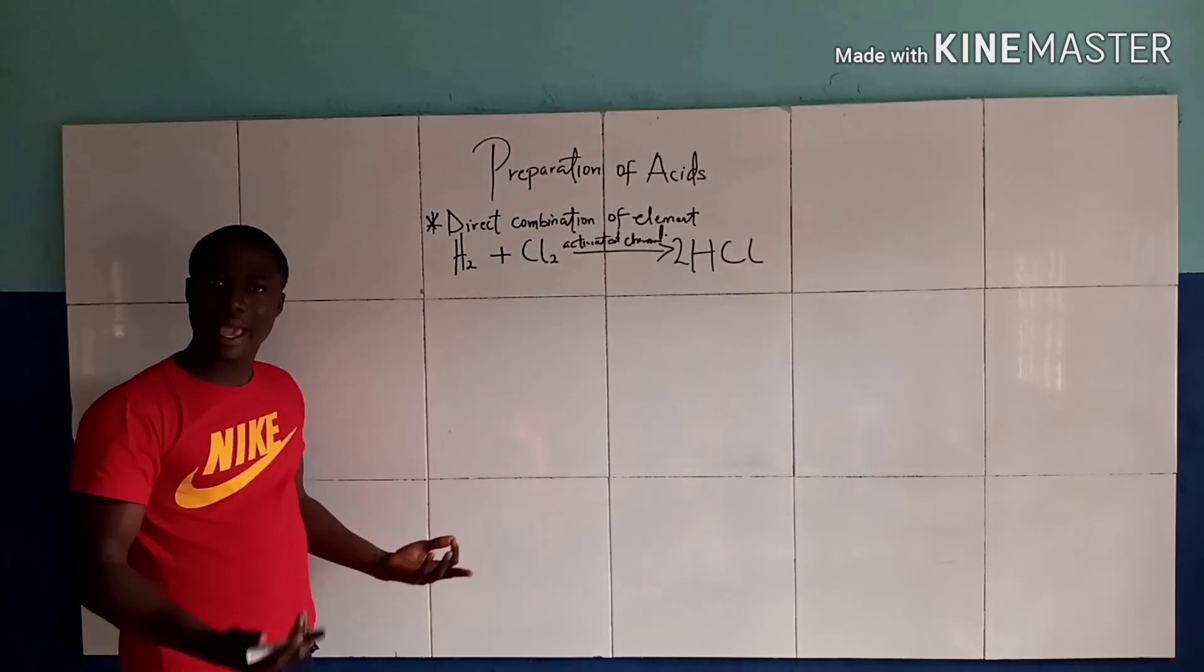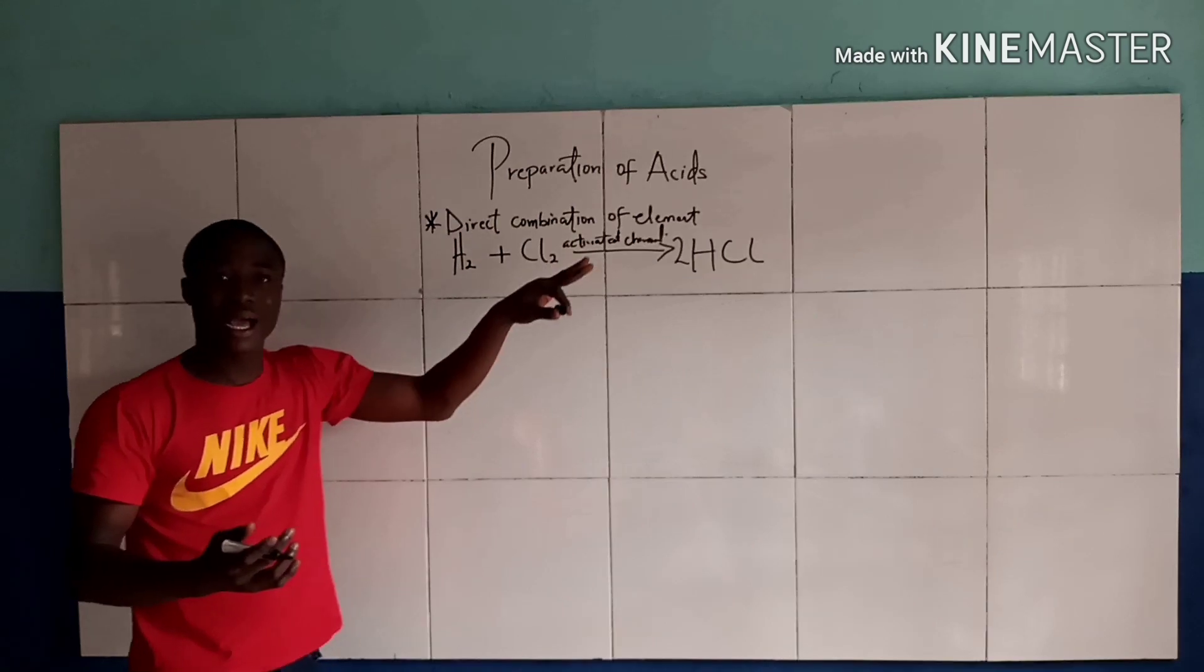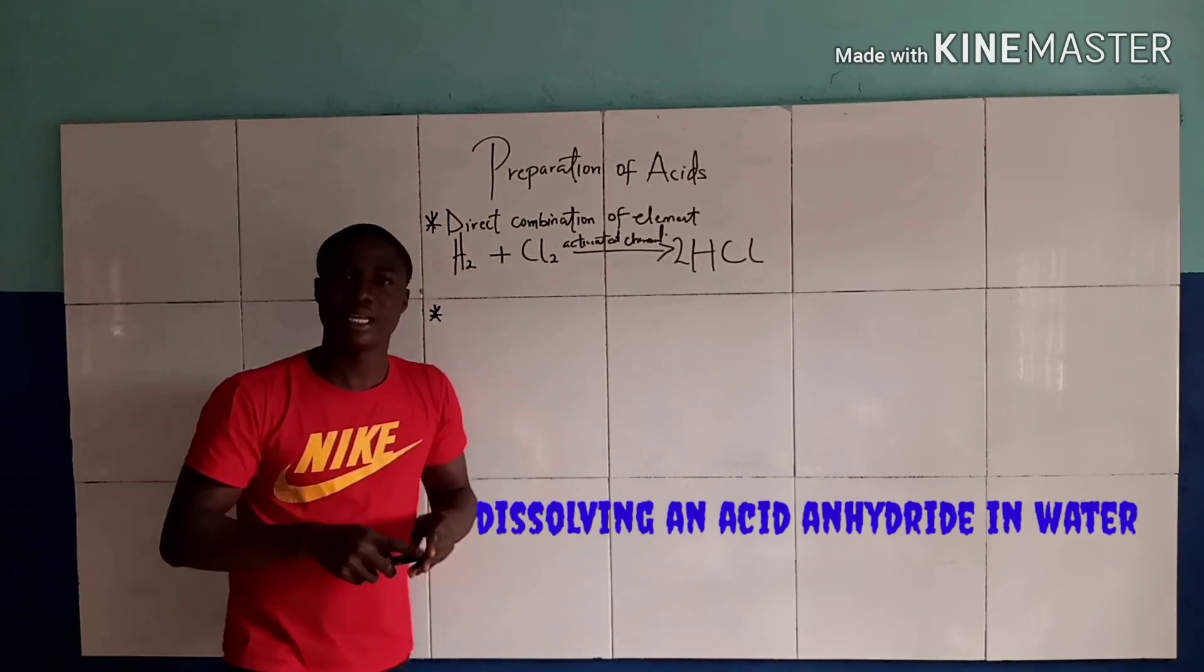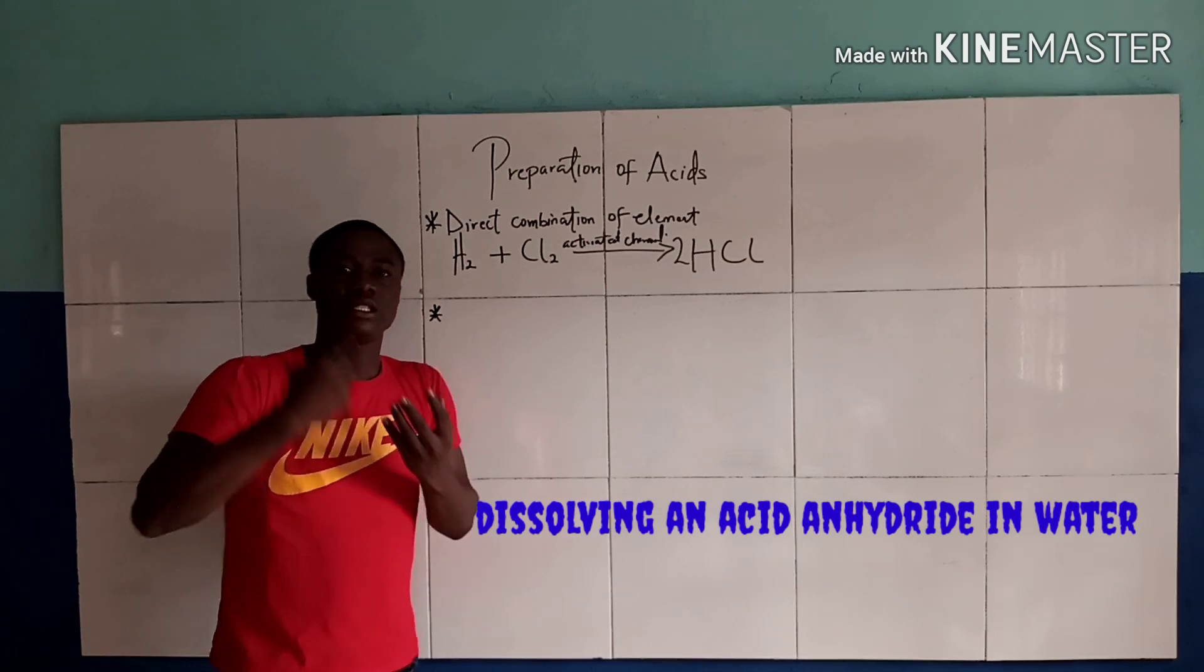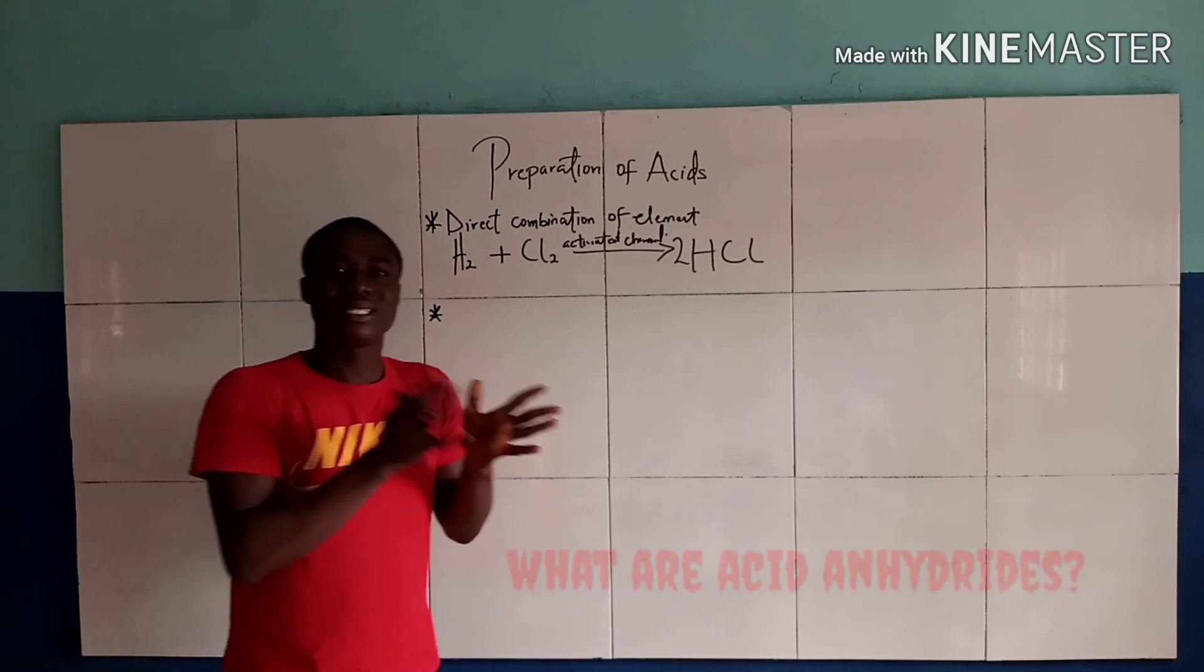Another process of forming an acid is by dissolving an acid anhydride in water.